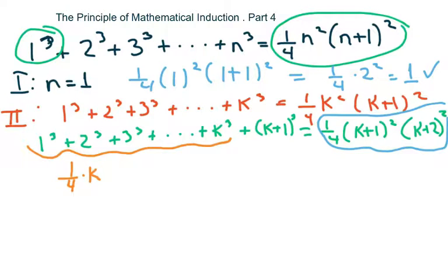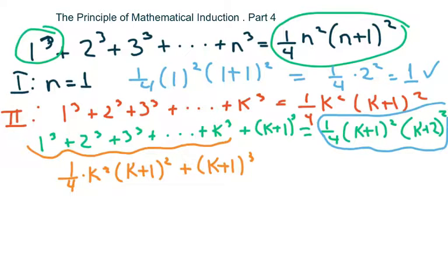This part equals one-fourth k squared times (k plus one) squared, and we're adding (k plus one) cubed. That's why we copied the line down twice — so we know this piece. Now we have to clean all that up.